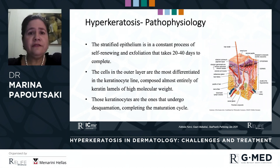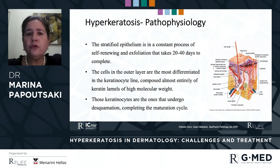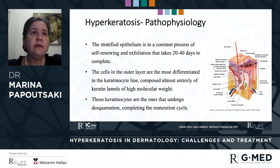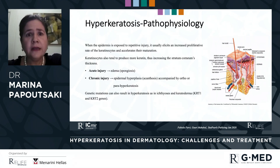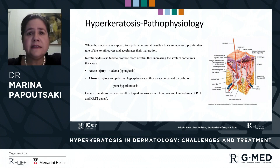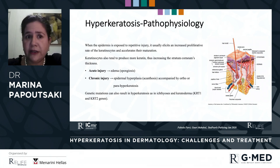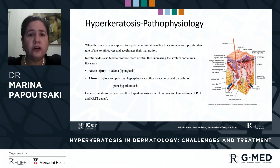The stratified epithelium is in a constant process of self-renewing and exfoliation that takes 20 to 40 days to complete. The cells in the outer layer are the most differentiated in the keratinocyte line, composed almost entirely of keratin filaments of high molecular weight. Those keratinocytes are the ones that undergo squamation, completing the maturation cycle. When the epidermis is exposed to repetitive injury, it usually elicits an increased proliferative rate of keratinocytes and accelerates their maturation. Keratinocytes also tend to produce more keratin, thus increasing the stratum corneum thickness.